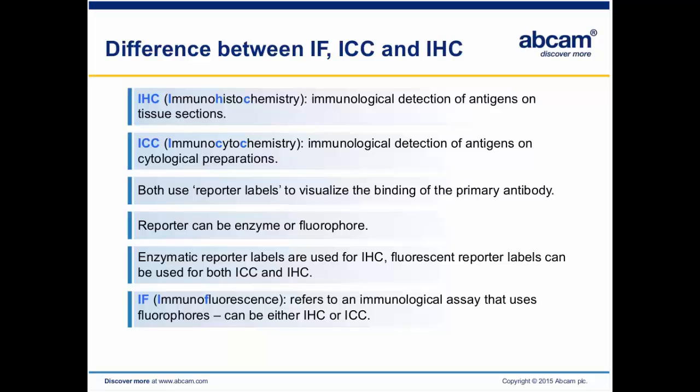The reporter label can be enzymatic or fluorescent. Enzymatic reporter labels are only used for IHC — you never use enzymatic reporter labels in immunocytochemistry. Whereas fluorescence reporter labels can be used for both IHC and ICC. A lot of times the term immunofluorescence is thrown around and it's not clear whether that's on tissue sections or on cells. When you're looking at an antibody and trying to get a protocol going, it's important to distinguish which has been used on which. When you say immunofluorescence, be sure it's either IHC or ICC.